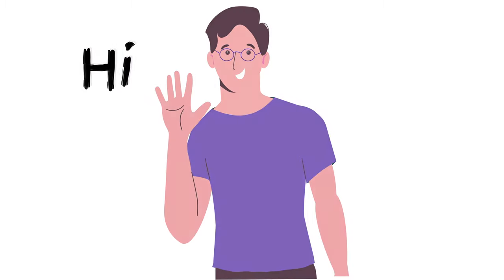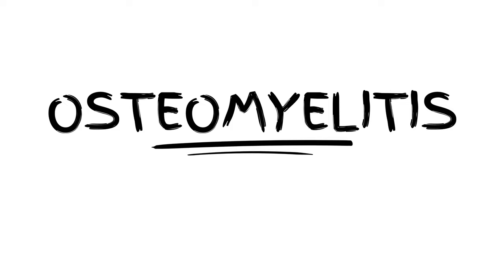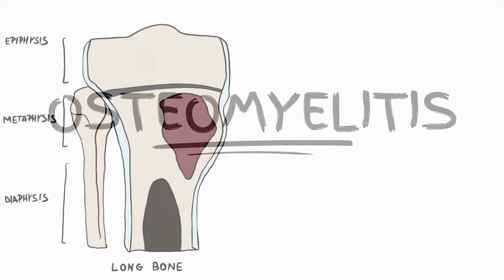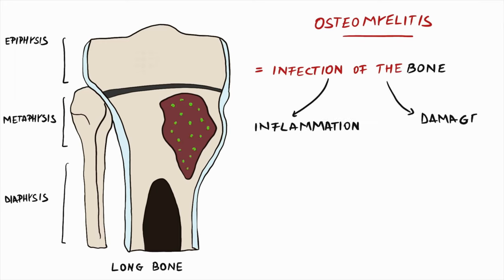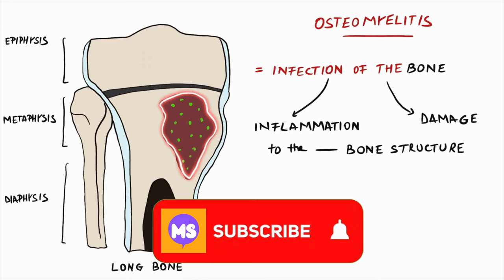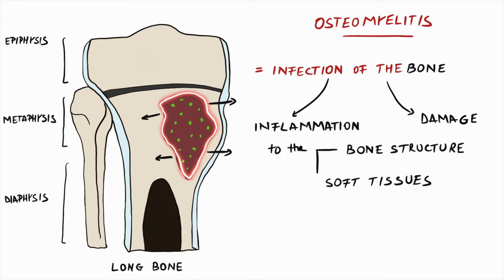Hi! My name is Mehdi Stop. In this video we are going to discuss about acute osteomyelitis. Osteomyelitis is the term used for the infection of the bone. It will result in inflammation and damage to the bone structure and the soft tissues. This is a condition more common in children rather than adults — more frequent for kids up to six years old.